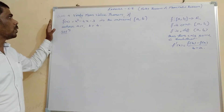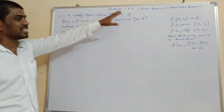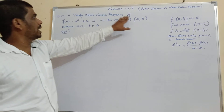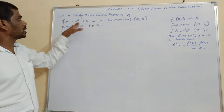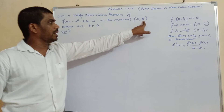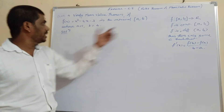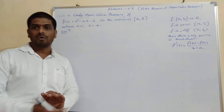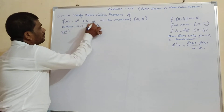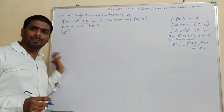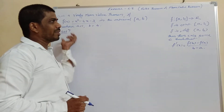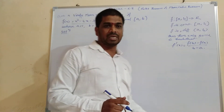Let us see question number 4 of exercise 5.8. Verify the mean value theorem if f of x is equal to this polynomial function in the interval a b, where a b is 1 to 4. We know that every polynomial function is differentiable as well as continuous. So let us see what the mean value theorem says.